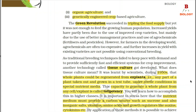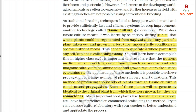As traditional breeding techniques failed to keep pace with demand and to provide sufficiently fast and efficient systems for crop improvement, another technology called tissue culture got developed. Scientists learned during the 1950s that whole plants could be regenerated from explants — any part of a plant taken out and grown in a test tube under sterile conditions in special nutrient media. This capacity to generate a whole plant from any cell or explant is called totipotency.